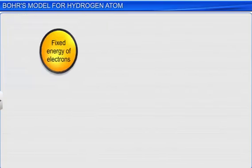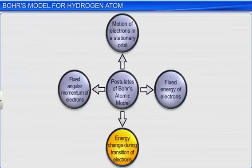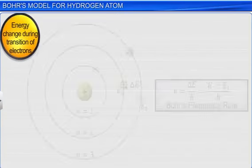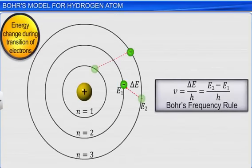The third postulate states that the frequency of the radiation emitted or absorbed can be represented by the equation nu equals delta E divided by H. That is E2 minus E1 divided by H, where E1 and E2 are the energies of the lower and higher stationary states, and H is Planck's constant.